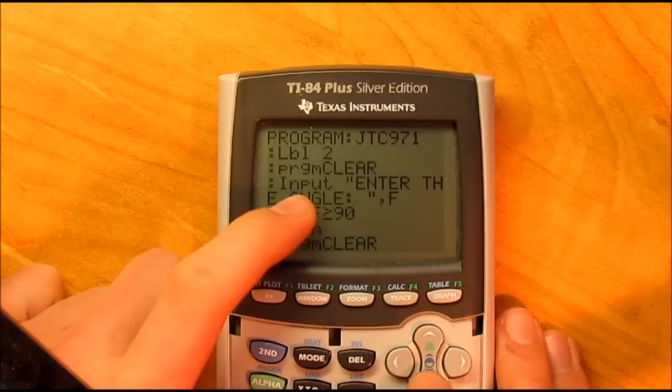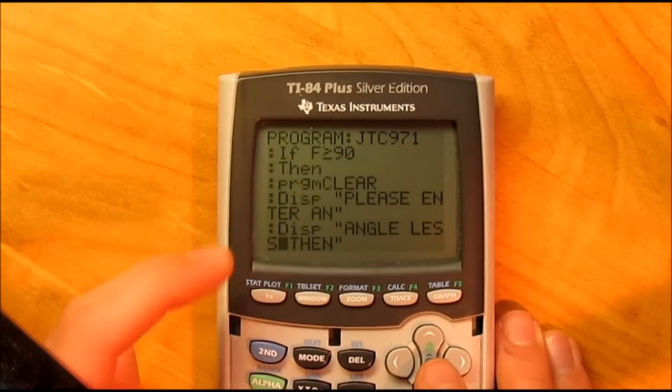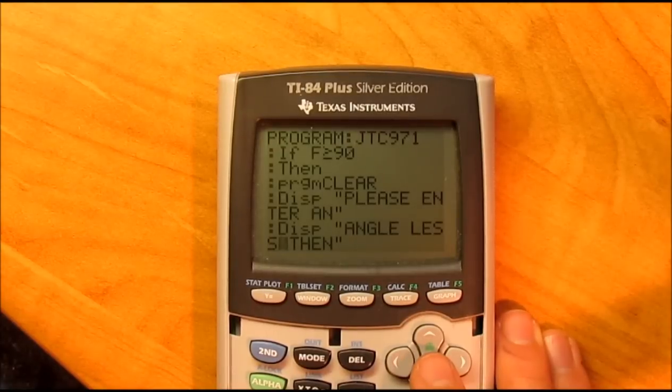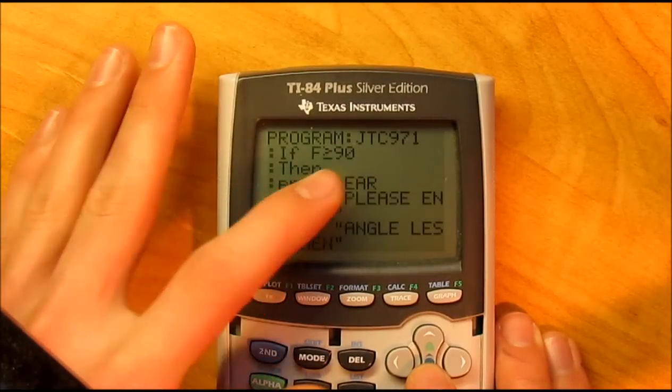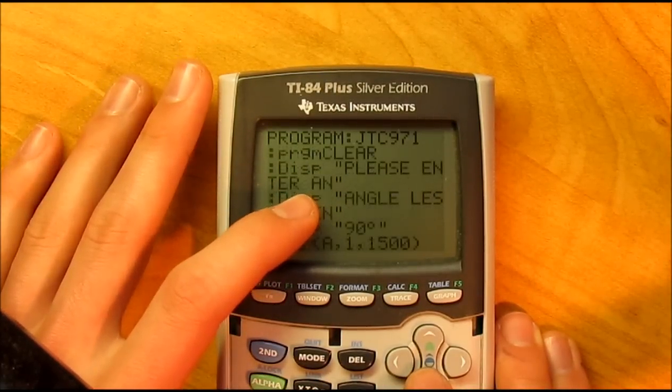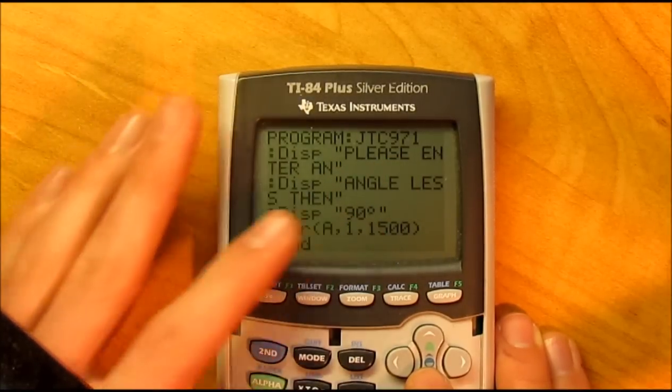Right here we have a built-in device to stop you from trying to input an angle that is greater than 90. So if the angle that they input is greater than 90, then run program clear and say please enter an angle less than 90 degrees.